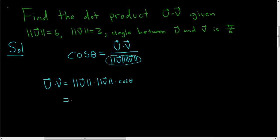And now we can just plug in all of the given information and we're done. The magnitude of u is 6, times the magnitude of v, that is 3, times the cosine of theta, and we're told theta is equal to pi over 6.